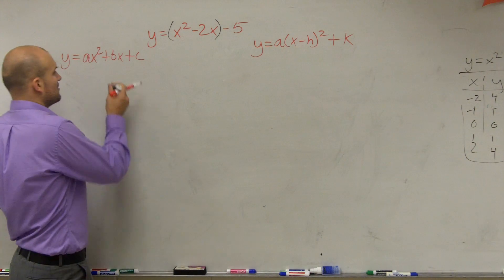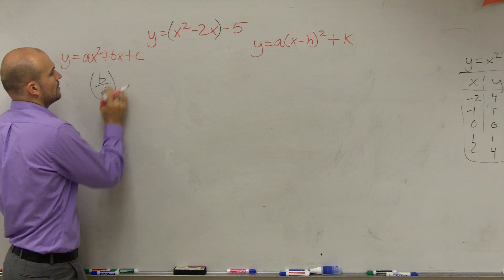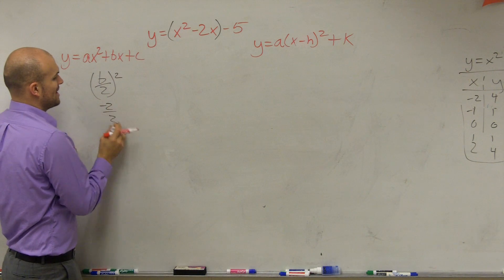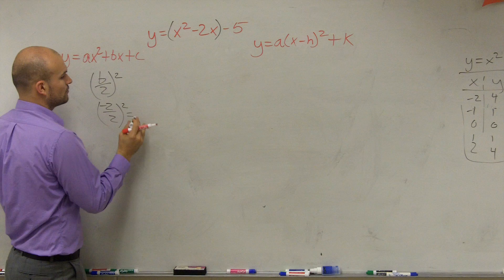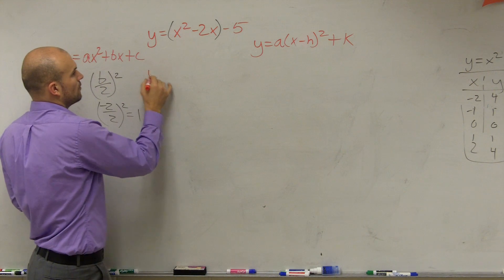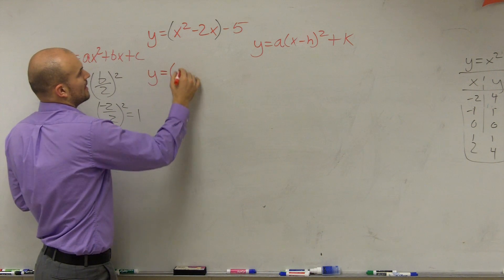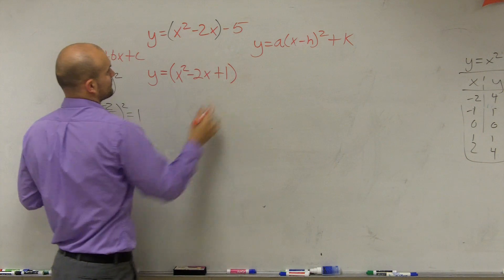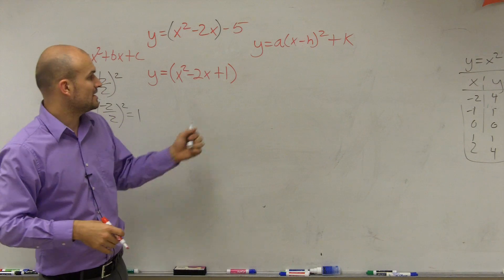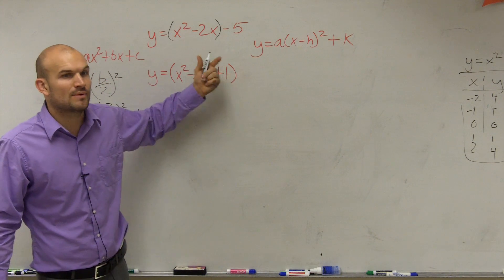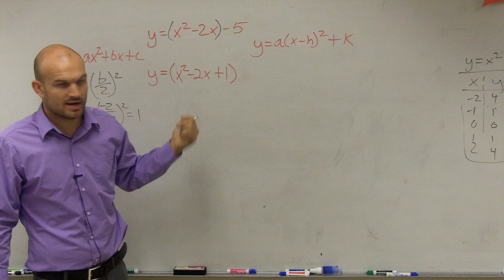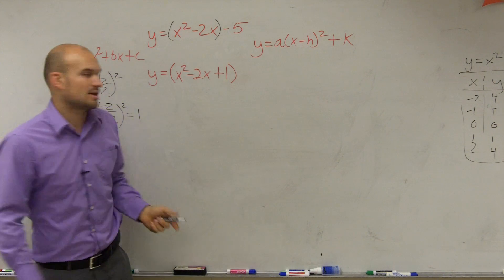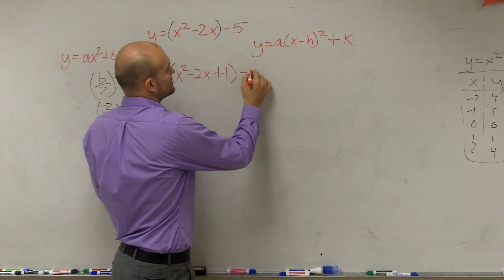We do that by taking b divided by 2 and squaring it. So negative 2 divided by 2, squared, equals 1. Therefore I have y equals x squared minus 2x plus 1. Now, whenever we added one to one side we had to add one to the other side, right? But again, I don't want anything affecting this y — I want y by itself. So what I'm going to do is add it to the same side.